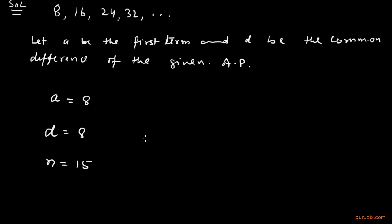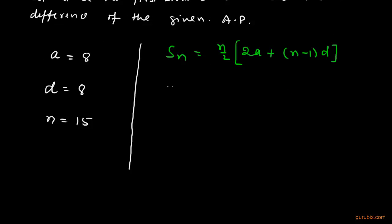We shall use the formula of sum to find the sum of first 15 terms. The formula is Sn equals n over 2 multiplied by 2a plus n minus 1 into d.